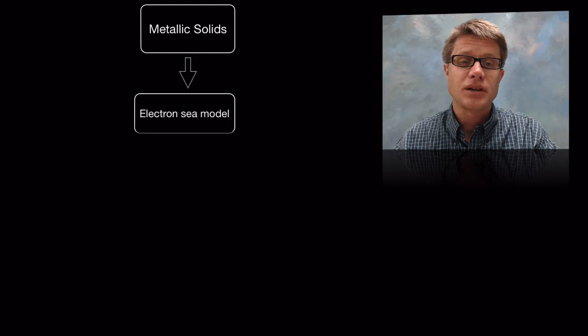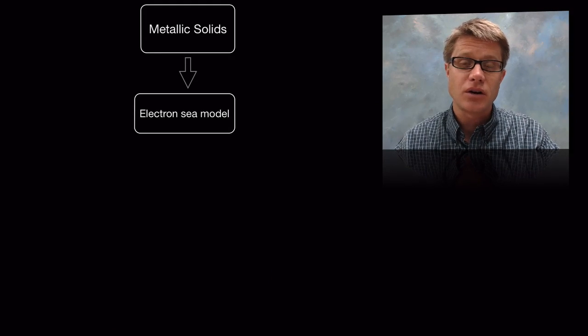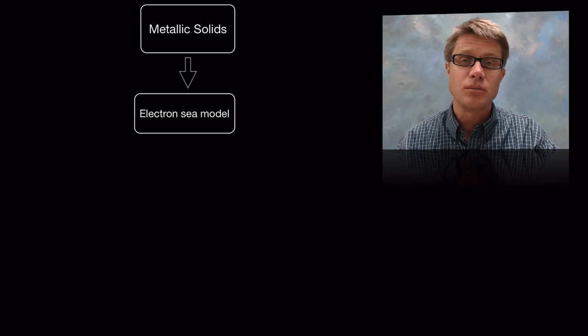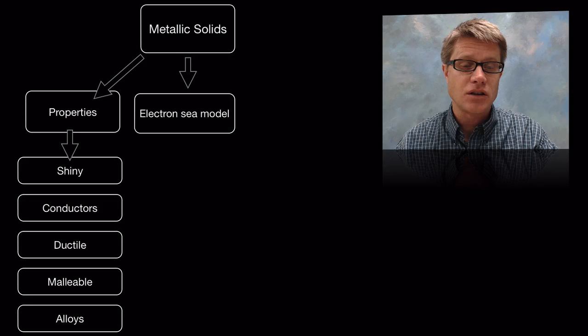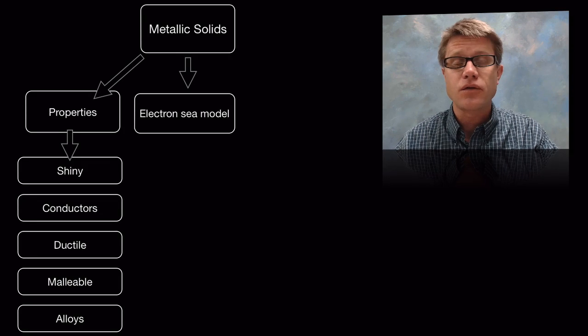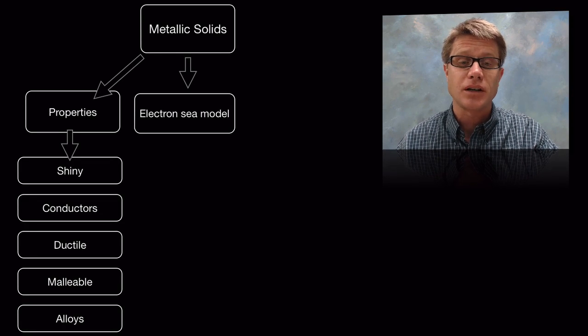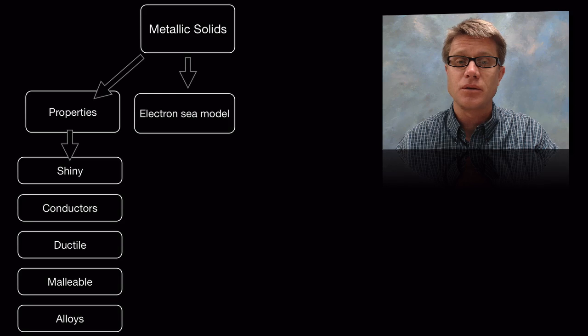And so metallic solids are built on this electron sea model where all those electrons are free, able to move around. And that gives them lots of different properties. They're shiny, good conductors. They're ductile. They're malleable. And they can form these alloys. And that's all built on this idea that the electrons are free to move about.